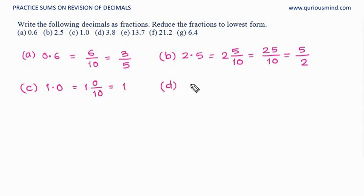D, 3.8. 3 is the whole and 8 at the 10th place. 8 tenths. 10 threes are 30, 30 plus 8 is 38. 38 upon 10. A common factor is 2. If I divide both numerator and denominator by 2, I get 19 upon 5.